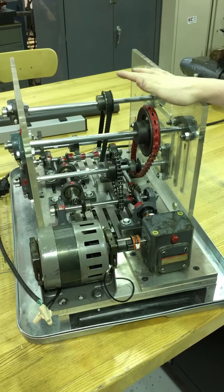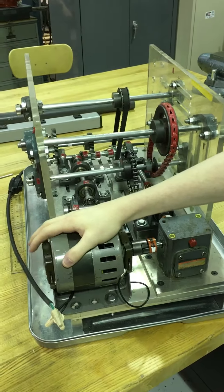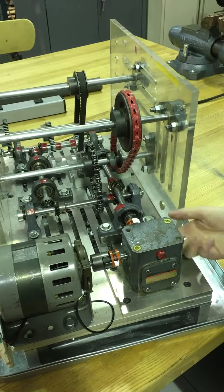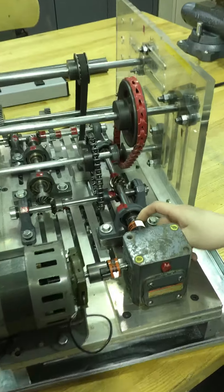All right, so this is our do-nothing machine. We've got an AC motor here that drives the gear reducer which drives shaft one.